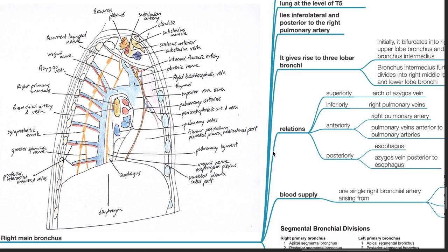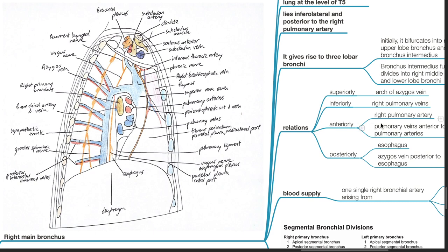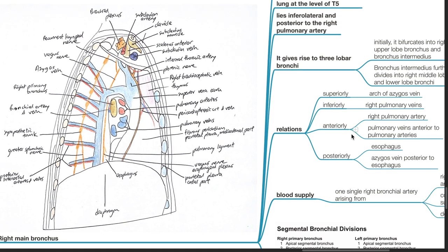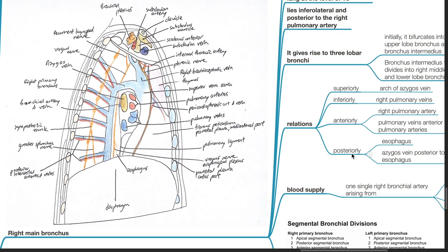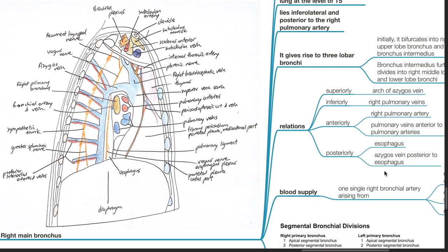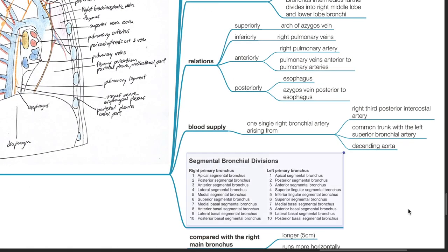Relations of the right main bronchus: superiorly, the arch of the azygous vein; inferiorly, the right pulmonary veins; anteriorly, the right pulmonary artery and pulmonary veins anterior to the pulmonary arteries; posteriorly, the esophagus and the azygous vein posterior to the esophagus. Blood supply is from a single right bronchial artery arising from the right third posterior intercostal artery, a common trunk with the left superior bronchial artery, and the descending aorta.